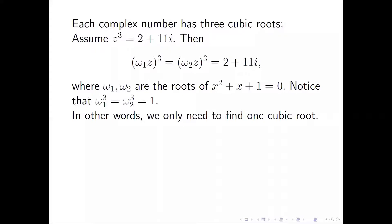Each complex number has three cubic roots. Assume we have one of them, then the other two complex cubic roots can be easily obtained by a simple multiplication. In other words, we only need to find one cubic root.